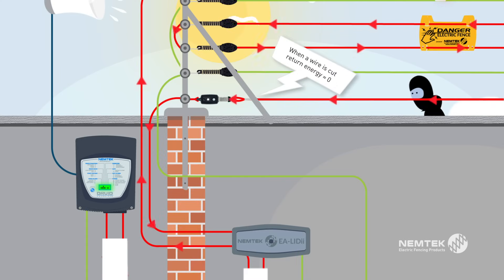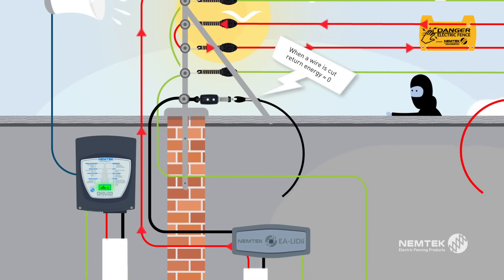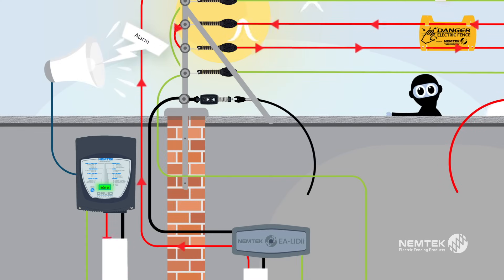If the wire is cut, the high voltage pulse returning to the energizer will be zero. The alarm will be triggered and the energizer display will go red.